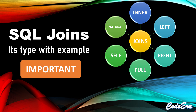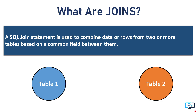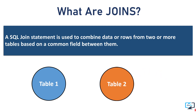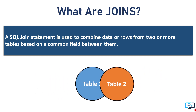So friends, today we will discuss joins and its different types. First let's understand what joins are. Joins are working to connect different tables. Joins help us combine data from different tables based on a common field or column between those two tables.